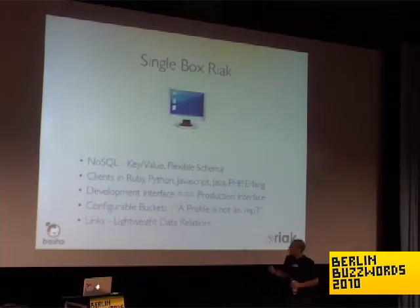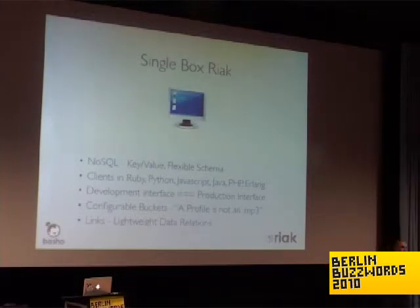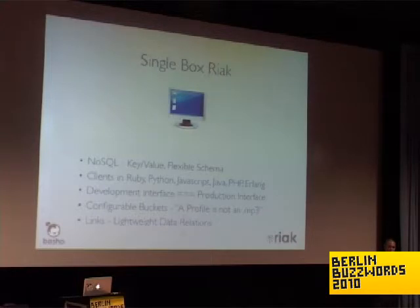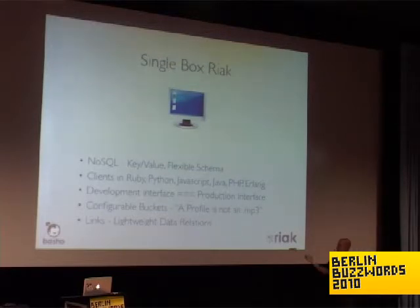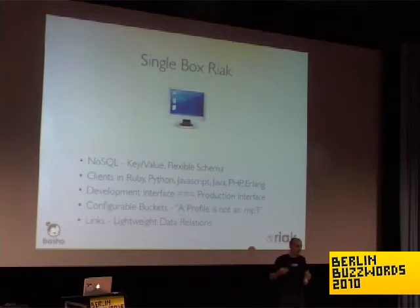Also important on a single-box installation is something called links — a lightweight data relation between two objects. You create two Riak objects with a parent-child relationship, and at query time you pass in a key plus instructions on how to walk from that key to all child relations. All of that walking happens on the server, and then you get back the resulting set of objects. This lets you do lightweight data relations and simple graph operations — you don't want to do millions of nodes like Neo4j, but for simple graph-based things, Riak works well.